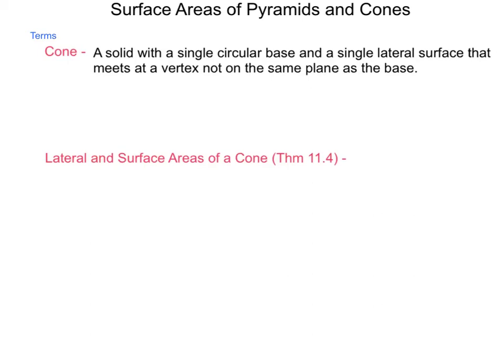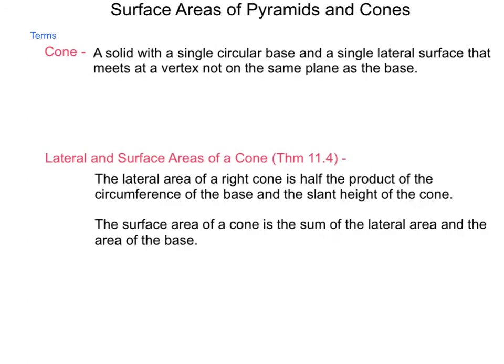The lateral surface area of a cone is given in theorem 11.4, and it states the lateral area of a right cone is half the product of the circumference of the base and the slant height of the cone. For our lateral area, this is equal to 1 half times 2 pi r l. Now the 1 half and the 2 are multiplicative inverses, so this will simply come down to pi r l.